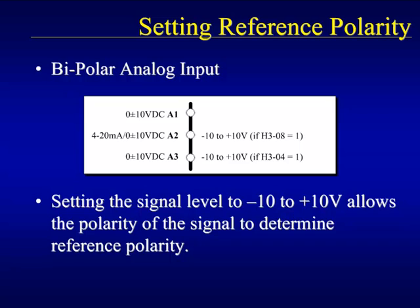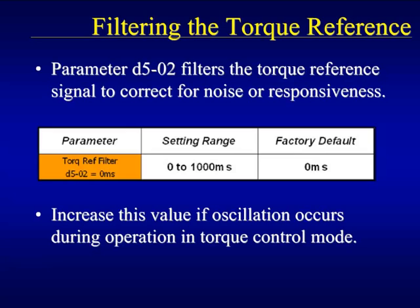Another method of changing torque reference polarity is by setting up the analog input being used for the torque reference as a negative 10 to plus 10 volts signal level. When the reference signal is between 0 and positive 10 volts, the torque reference will be in the same direction as the forward run command. Conversely, if the signal is between 0 and negative 10 volts, the torque reference will be in the opposite direction as the forward run command. Electrical noise or poor signal quality may cause an errant torque reference signal. Adding a filter to the torque reference will reduce the effect of fast signal variations. Parameter D502 can be configured to continuously filter the torque reference for time periods of up to one second. This does not mean that the torque reference will change only once per second, but that all of the values of the previous second will be averaged to filter out any spikes that may occur on the signal.